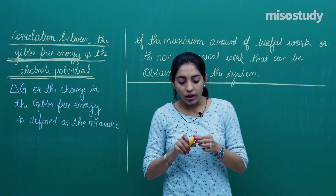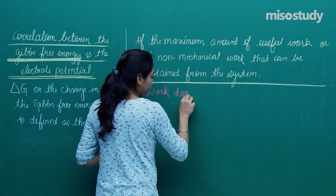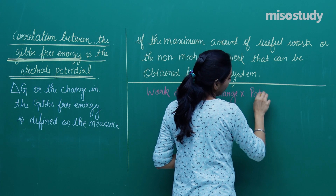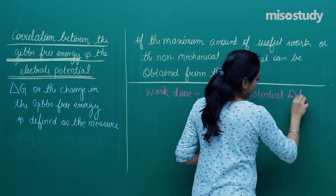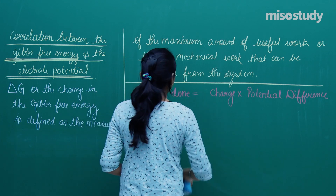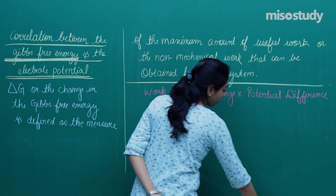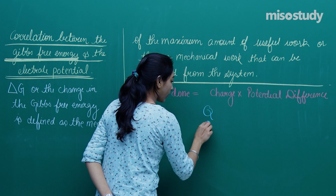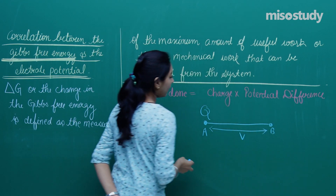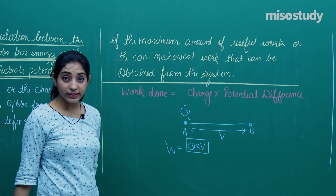What is the formula for work done? Work done can be written as charge multiplied by potential difference. If Q amount of charge is moving from point A to point B and the potential difference between these two points is V, then the work done will be equal to charge into voltage.